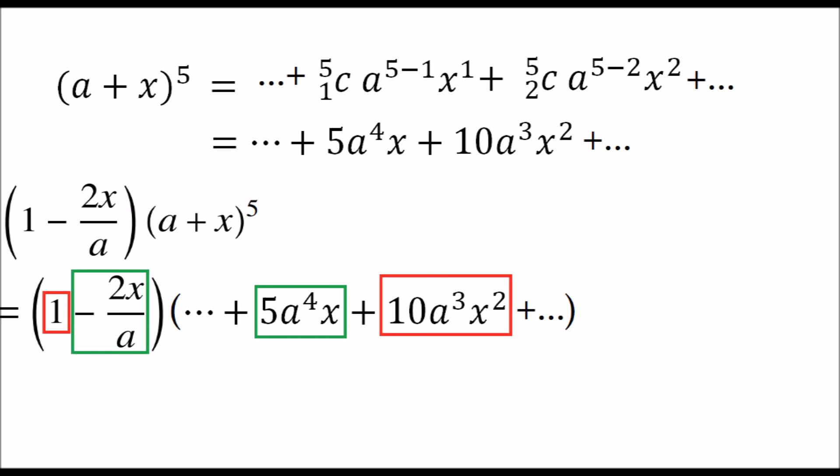Multiplying the terms in the boxes with the same color will give x squared. Red into red will give x squared and green into green would also give x squared. You should get the same terms with the positive and negative sign.